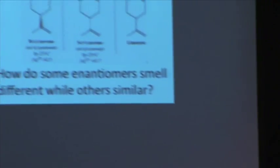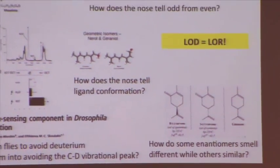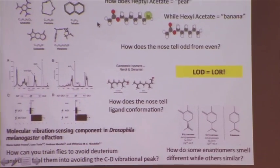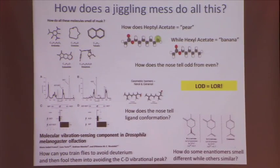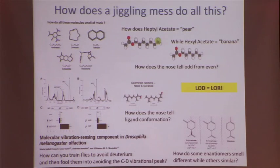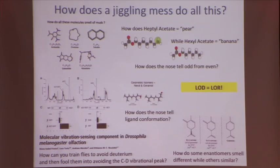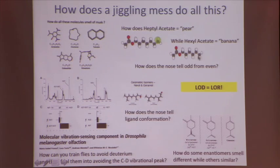How does this jiggling mess do all these interesting things? How does it know to tell me that very different shaped molecules all smell of musk? We have no two molecules that we cannot learn to tell apart. If you find any two molecules that have a scent, you will be guaranteed to eventually be able to learn to tell them apart. But we can always also tell which molecules smell similar, and we can agree upon it — our nose is an objective measure.